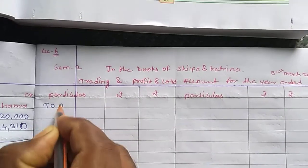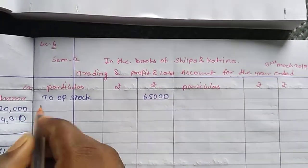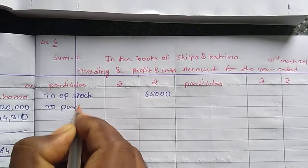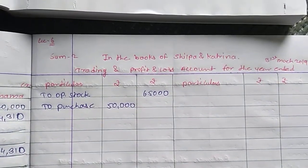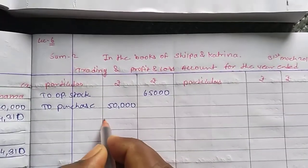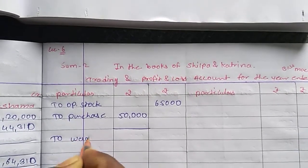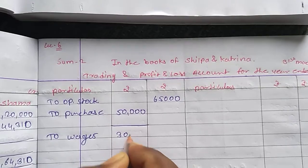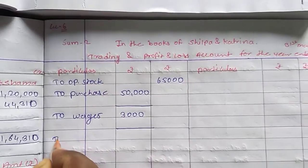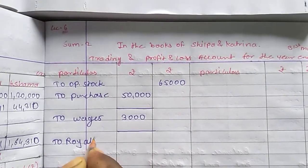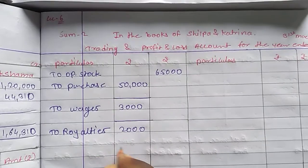In the trading account debit side: opening stock — Rs. 65,000. Then purchases — Rs. 50,000. There is a working note given. Return of purchase — leave one line. Then next: wages — given to adjustment, leave one line. Then next: royalties — this is also given to adjustment, leave one line.